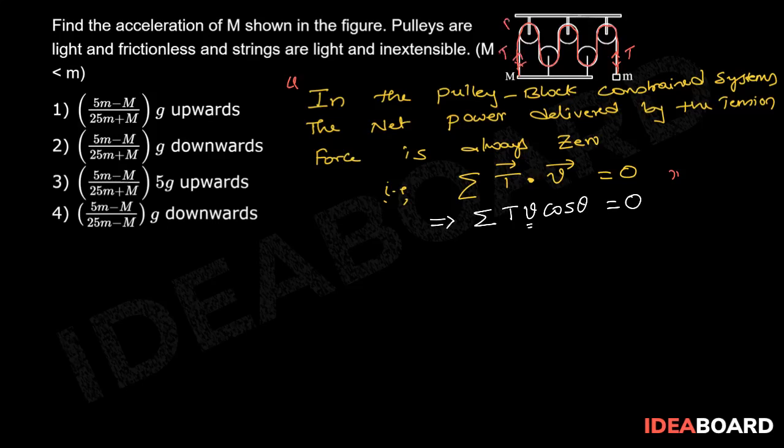So, let us name these pulleys as P1, P2, P3, P4 and P5. And as it is said in the question that pulleys are massless, to have net force acting on these pulleys to be zero, the tension in the strings connected between P2, capital M and P4, capital M should be 2T.